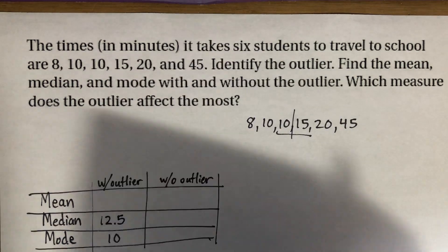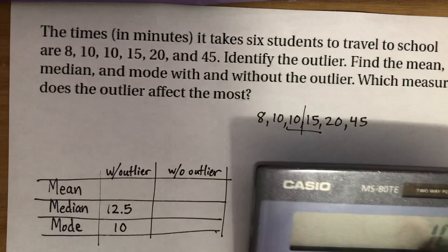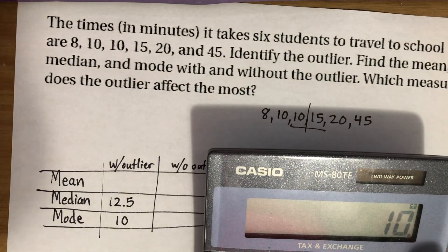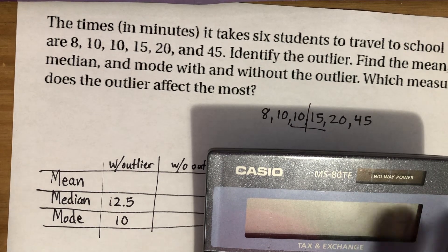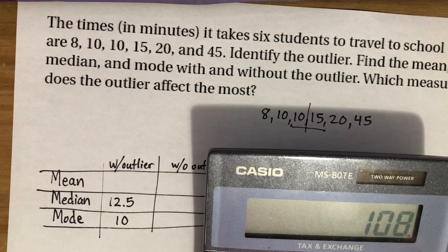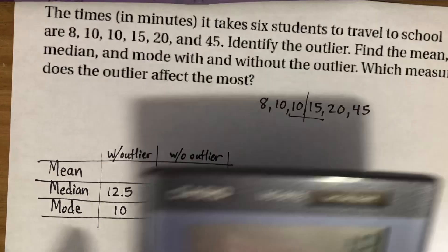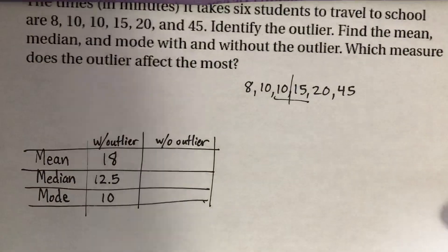And then my mean, I'm going to go ahead and add up all these numbers, 8 plus 10. So I want you guys to be able to see that plus 10, plus 15, plus 20, plus 45. And I get 108, which I'm going to divide by six. And I got 18. So with the outlier, my mean was 18.